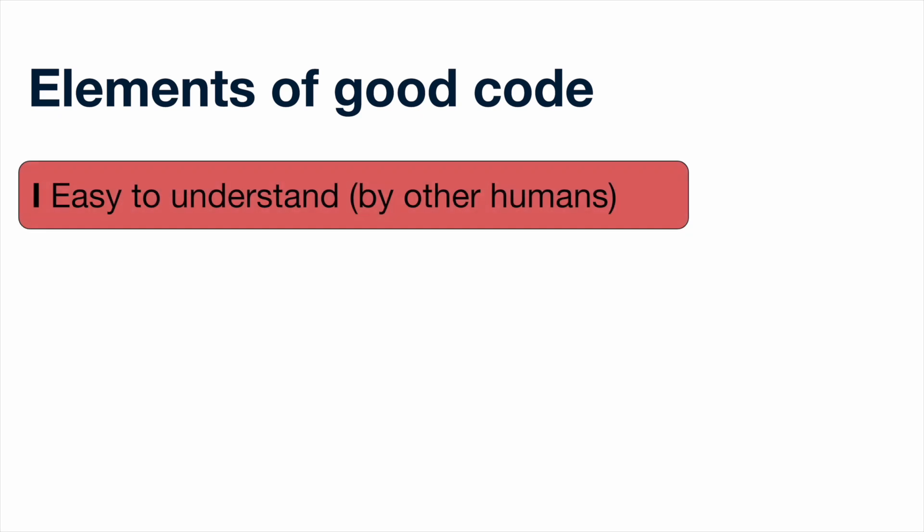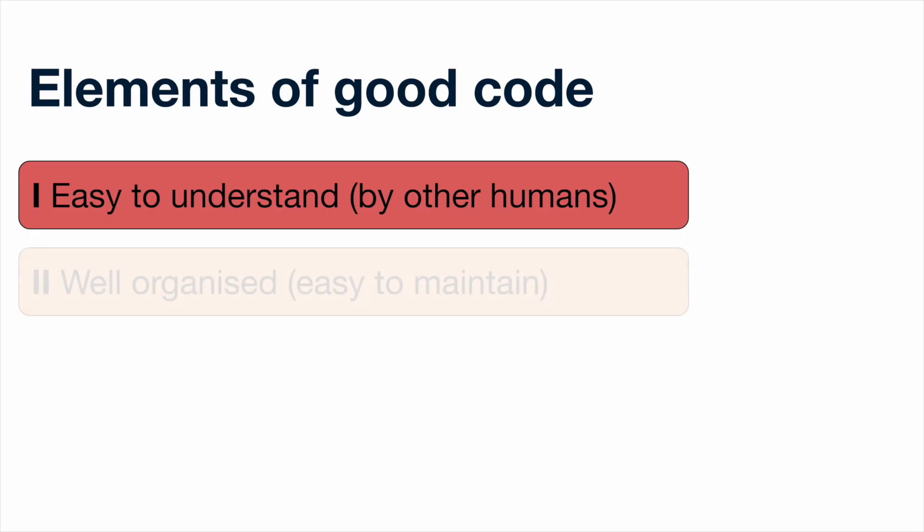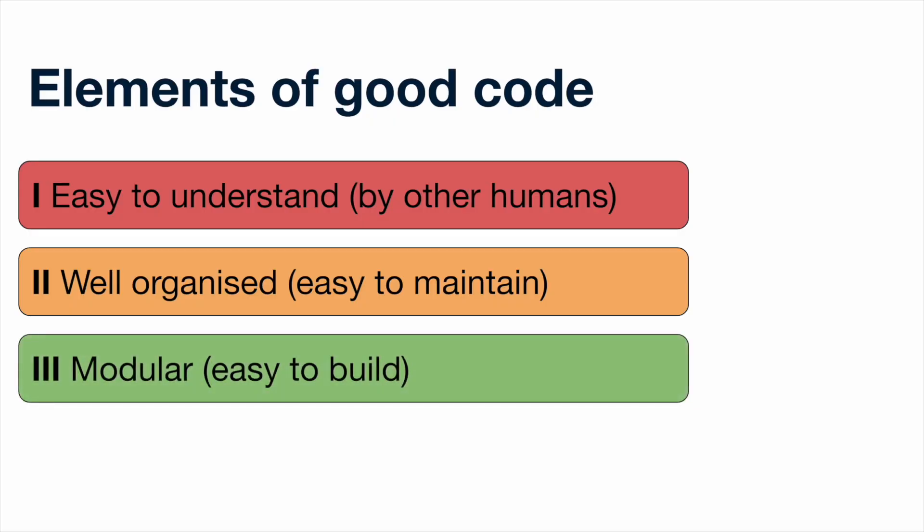Now let's get to the point of writing good code. What are the elements of writing good code? There are numerous elements, but let's highlight three key ones. Number one: it has to be understandable by humans — if people can't understand your code, they're not going to be able to make sense of it. The second is that it should be well-organized, because if it's well-organized it will be easy to maintain, and that is an important element of writing good code. Third, ideally your code should also be modular — written in a modular manner — because then it is much easier to build with.